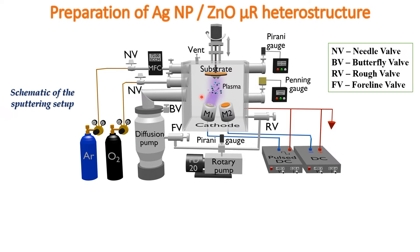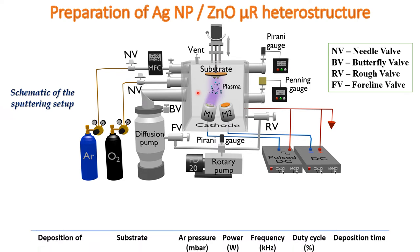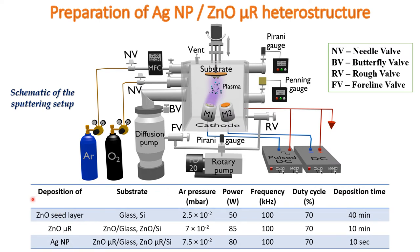Using this method, heterostructures of silver nanoparticles and zinc oxide microrods are prepared based on the following deposition parameters. First, zinc oxide seed layers are prepared on glass and silicon substrates with an argon pressure of 2.5 Pa, sputtering power of 50 W, frequency of 100 kHz, duty cycle of 70%, and a deposition time of 40 minutes. Upon them, zinc oxide microrods are grown with an argon pressure of 7 Pa, sputtering power of 85 W, frequency of 100 kHz, duty cycle of 70%, and a deposition time of 10 minutes.